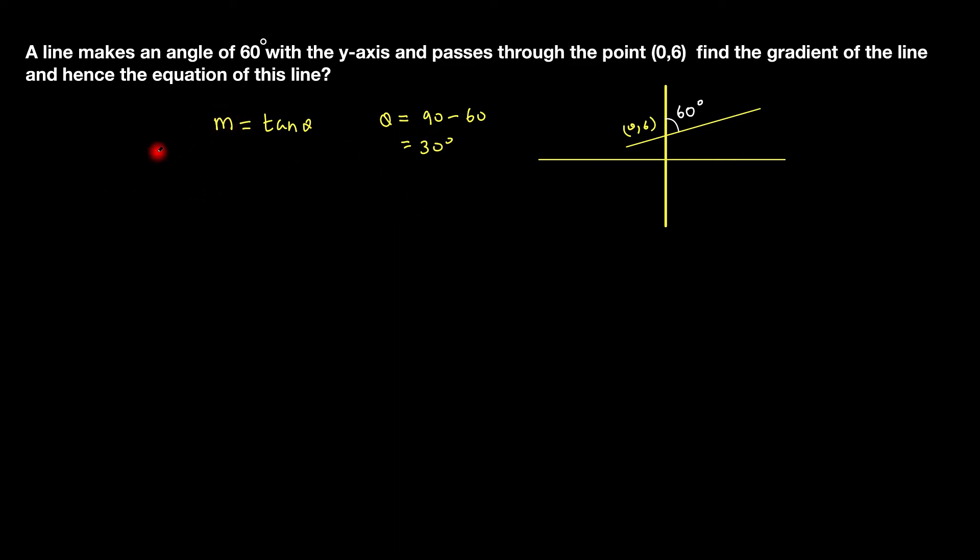Now I can get the exact value of m equals tan θ. In other words, it will be tan of 30 degrees. I'm going to be using the triangle. So if that's 30 degrees and this is 1, that's 2, that's root 3. So the exact value for tan 30 is opposite over adjacent, which is 1 over root 3. So that's my gradient: m equals 1 over root 3.